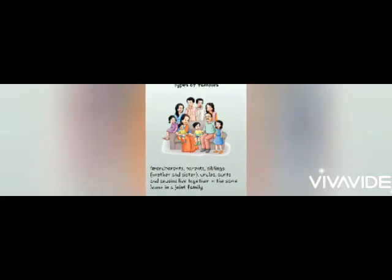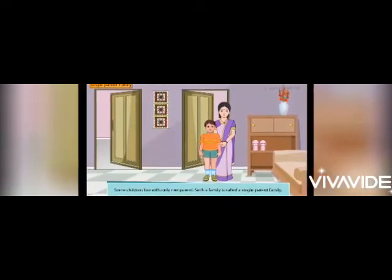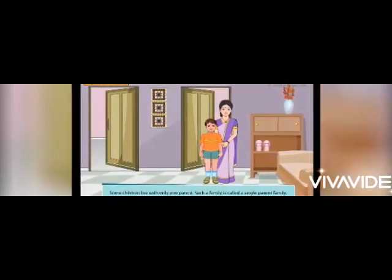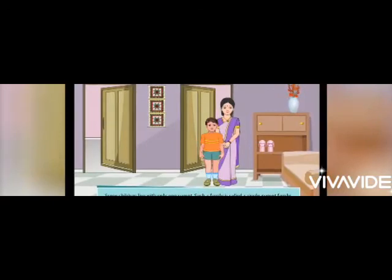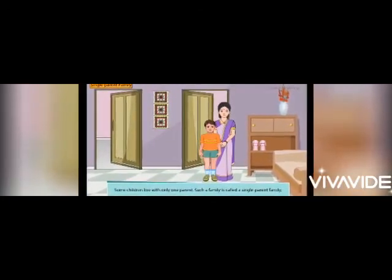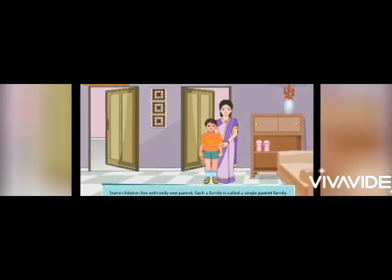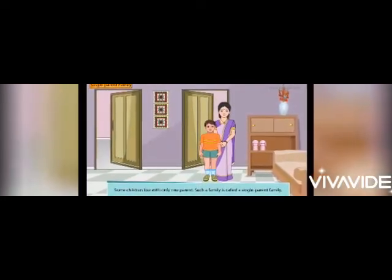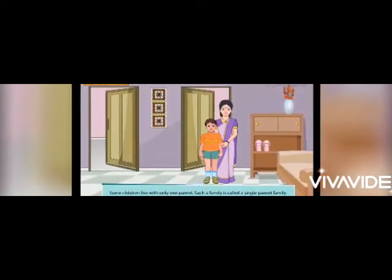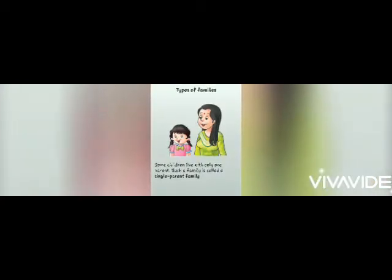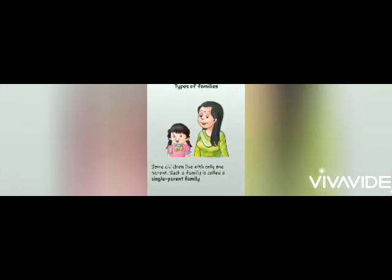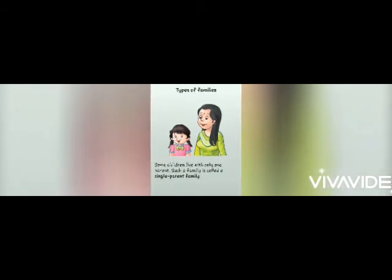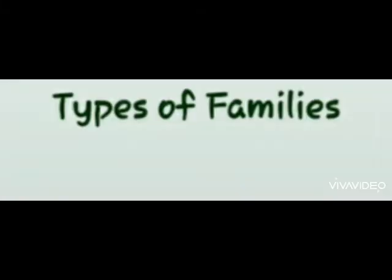The next one is single parent family. Some children live with only one parent — such a family is called a single parent family. It means कि बहुत सारे बच्चे ऐसे होते हैं जो सिर्फ एक ही parent के साथ रहते हैं — या तो पापा या तो मम्मी। बहुत सारे reasons होते हैं — या पापा बहुत दूर काम करते हैं, या कुछ के parents की death हो गई होती है।